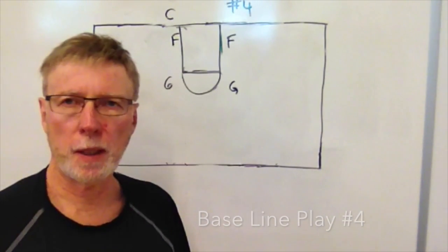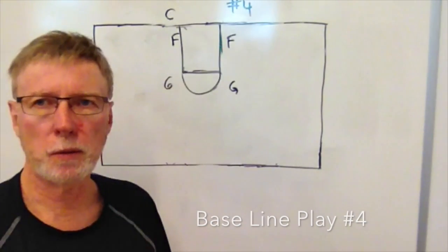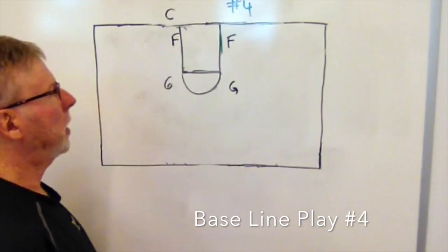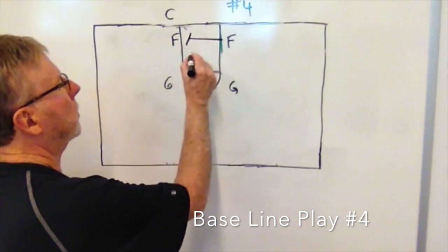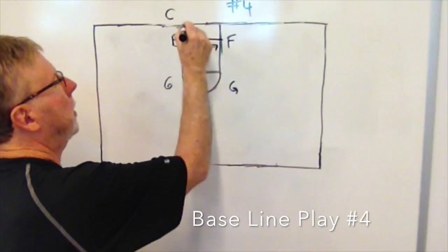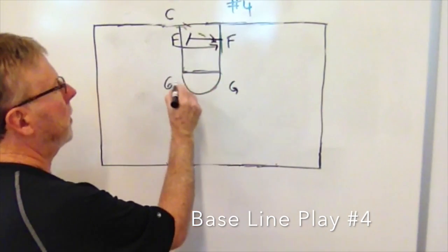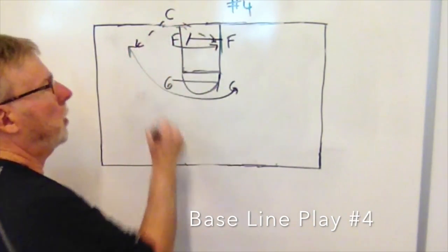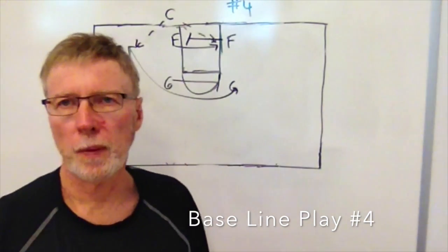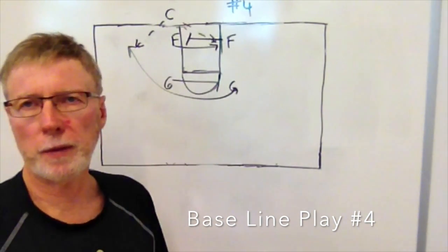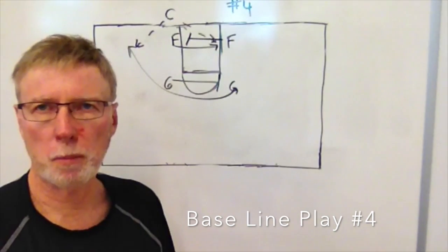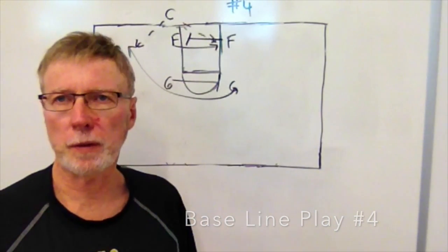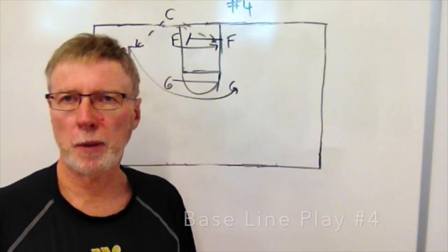On baseline out-of-bounds play number four, we set up exactly the same — center taking the ball out, two forwards on the baseline, two guards around the free throw line. This time we have the forwards cross, and we try to get the ball in. The guard also crosses and we look for the shot. We're trying to safely get the ball in bounds; if it pops open, we get a two. If not, we back it out and run our offense.